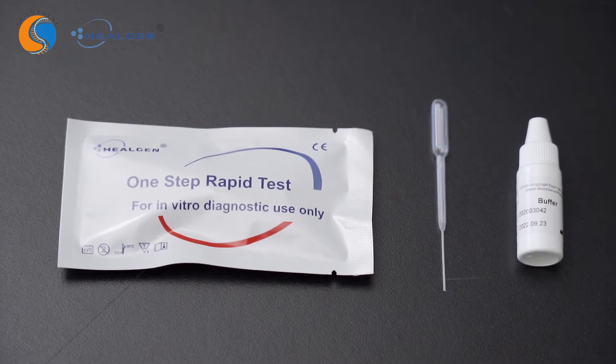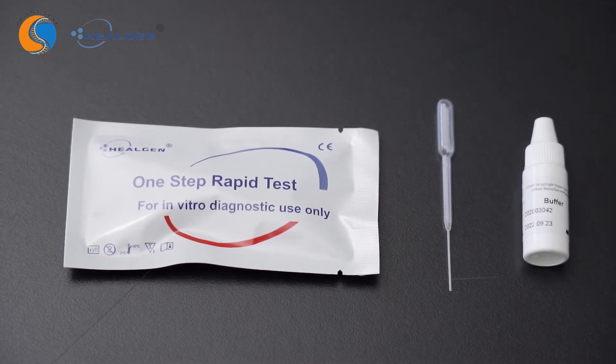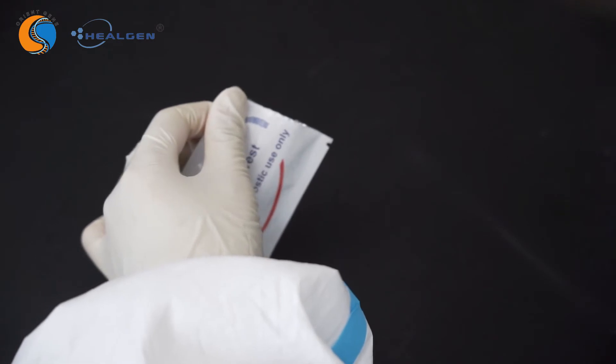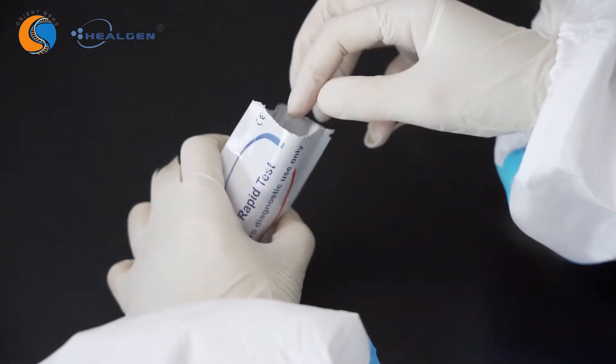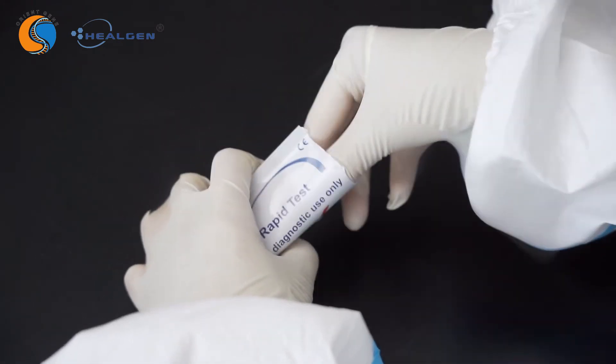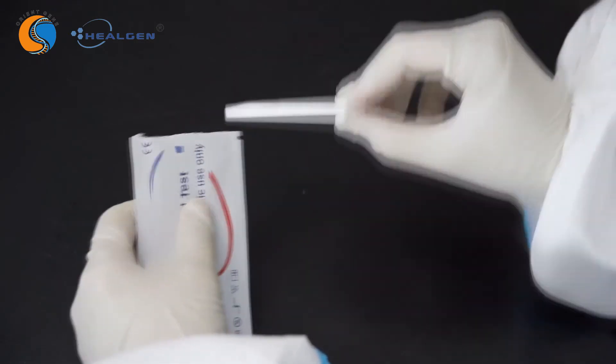Allow the test materials and specimen to reach room temperature before testing. Remove the test cassette from the sealed foil pouch. Do not open the pouch unless you are ready to begin the test. Place the test cassette on a dry, flat surface.